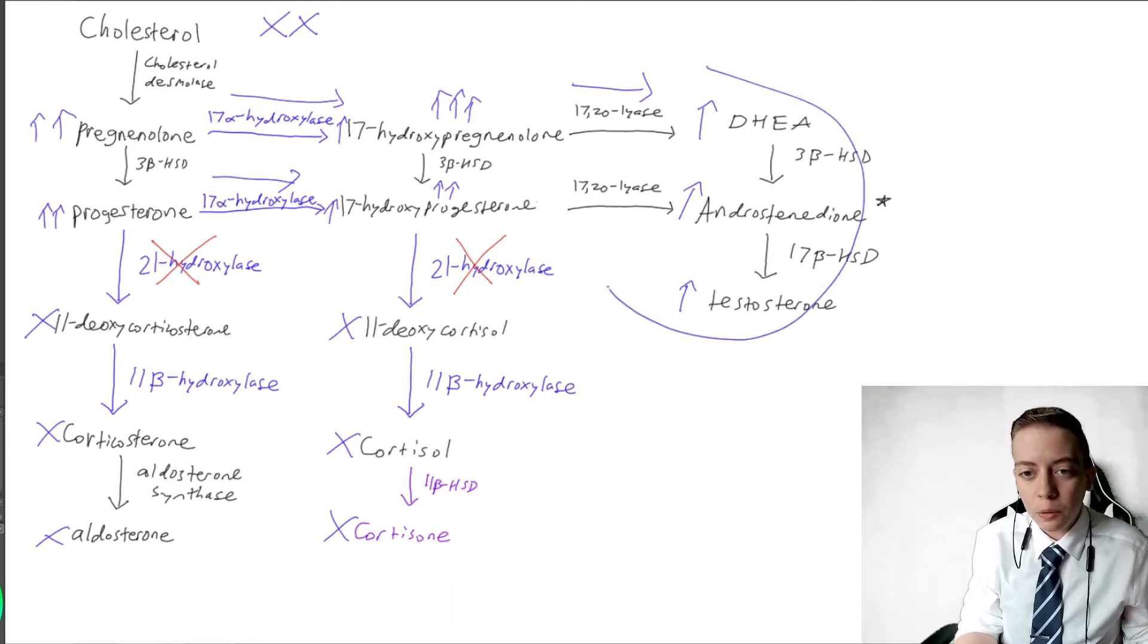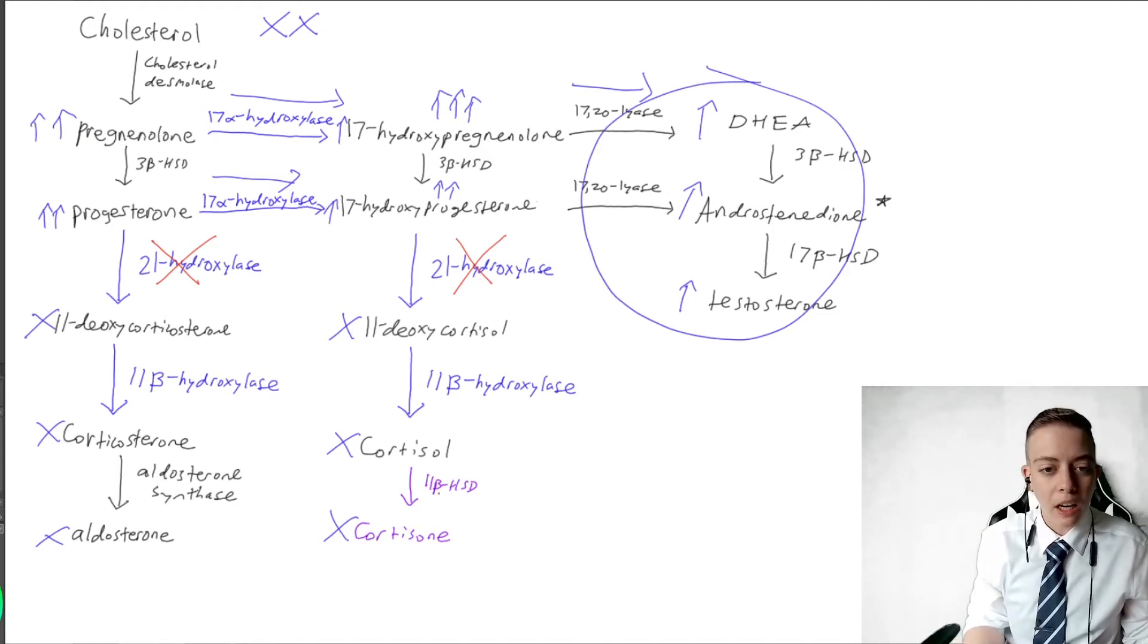So as you can see, this pathway here is favored because we can't undergo the other two pathways. So take somebody who is XX. Normally we're going to have somebody with low levels of testosterone and high levels of estrogens. They're going to have female external genitalia, female internal genitalia. But in this case, we have high levels of testosterone. So we're going to have masculinization of an XX fetus because of this high level of testosterone.